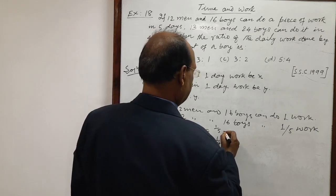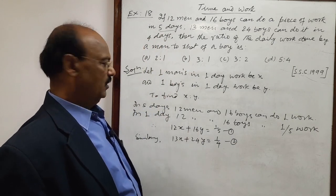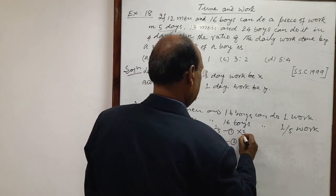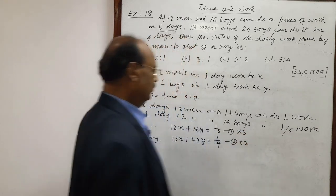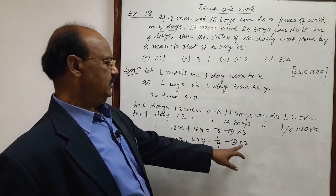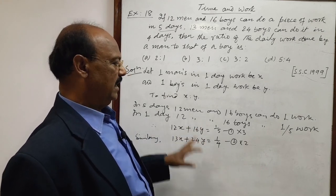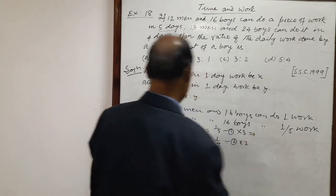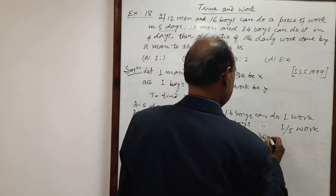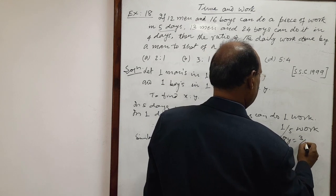This is equation number 1 and equation number 2. Now let us solve these two equations. If we multiply equation number 1 by 3 and equation number 2 by 2, then 16 into 3 is 48 and 24 into 2 is 48 — so after subtracting, the term having Y will be cancelled out. Multiplying equation 1 by 3 gives: 36X plus 48Y equals 3 by 5.